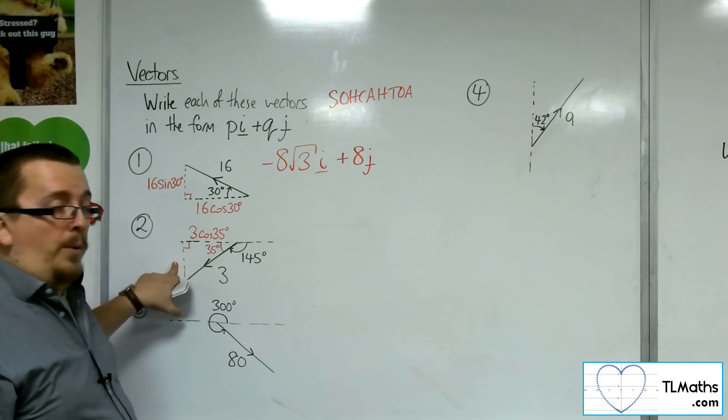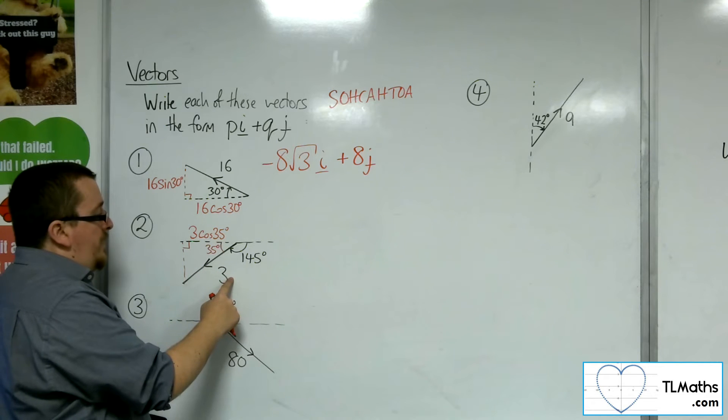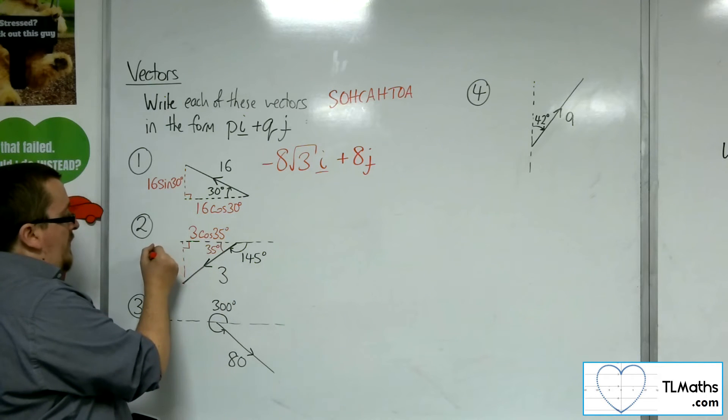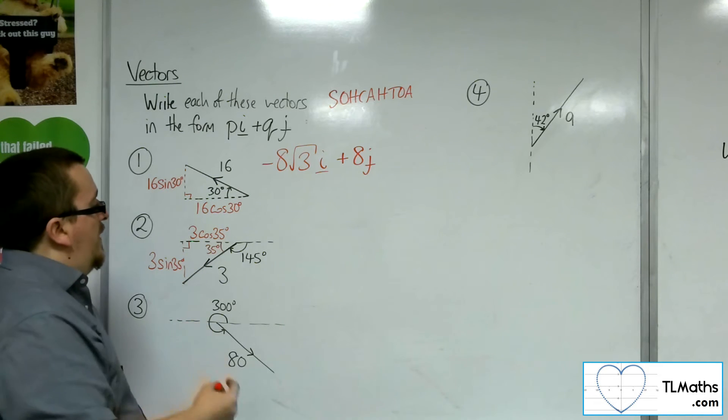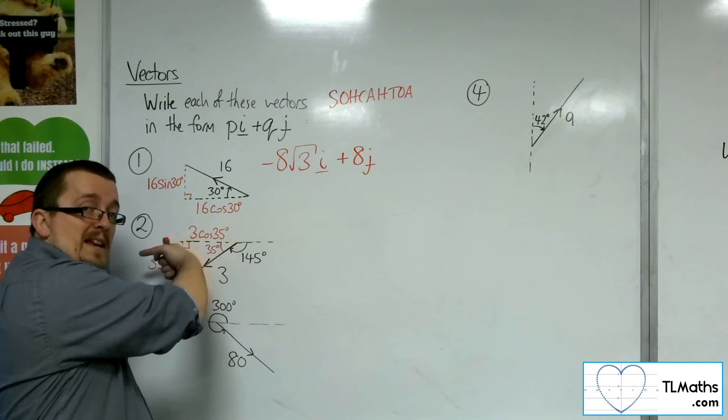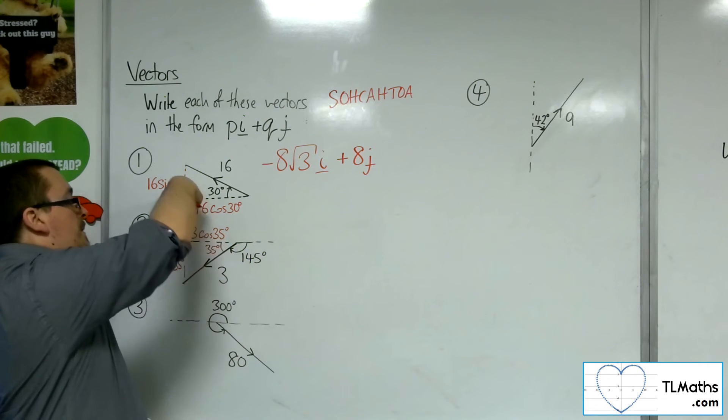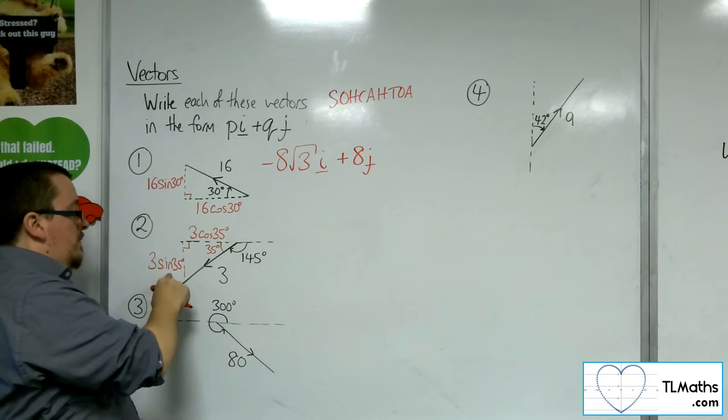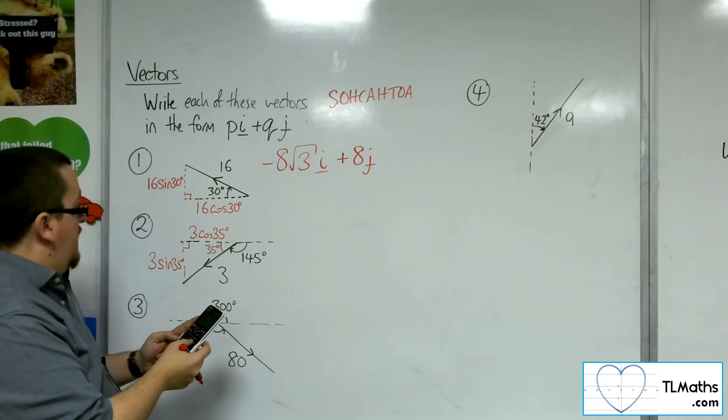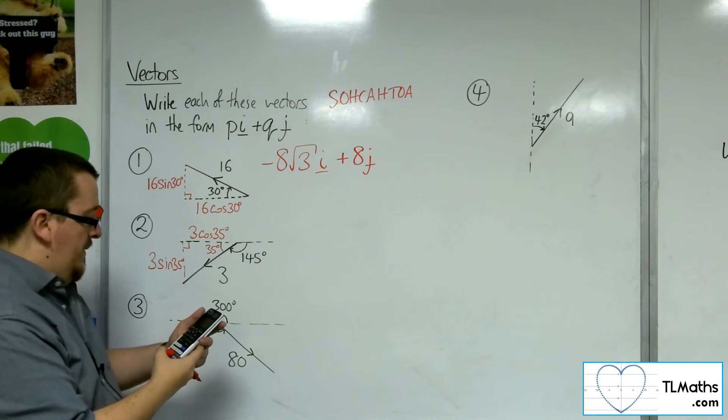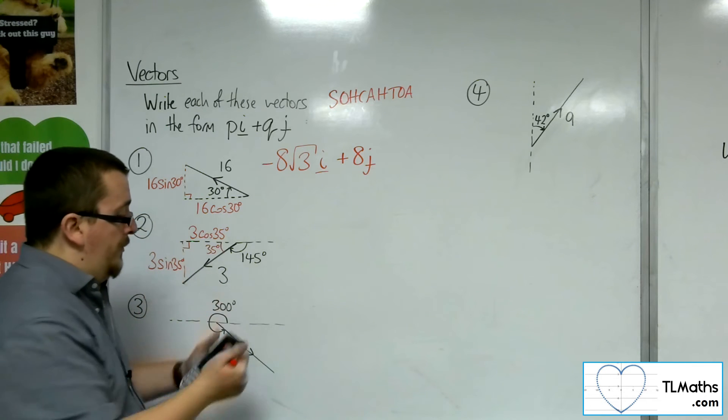As for the opposite side, sine of 35 is equal to the opposite over the hypotenuse. So the opposite side is 3 sine 35. So this time, I'm going to the left, so it's going to be negative of that, i, take away 3 sine 35j.